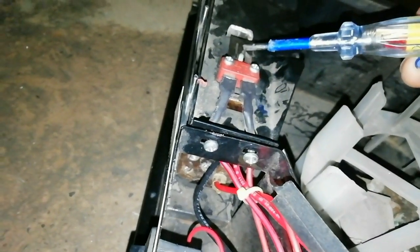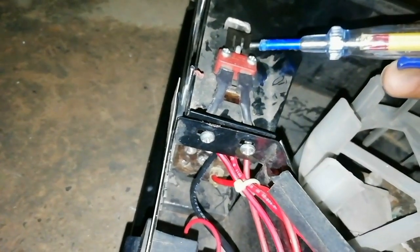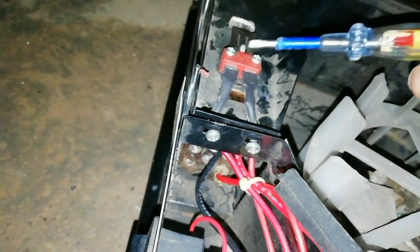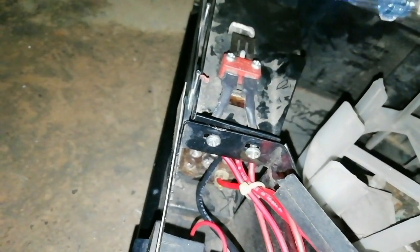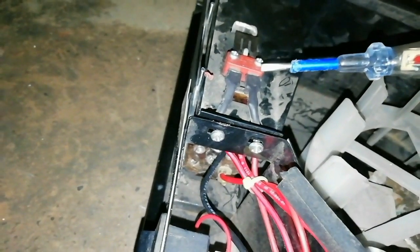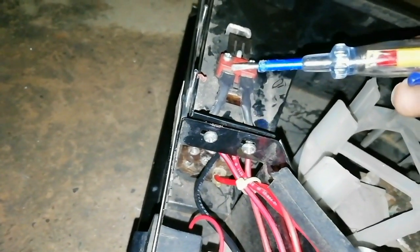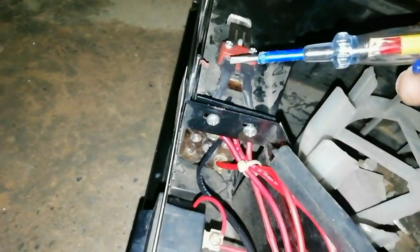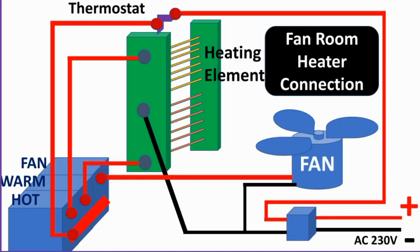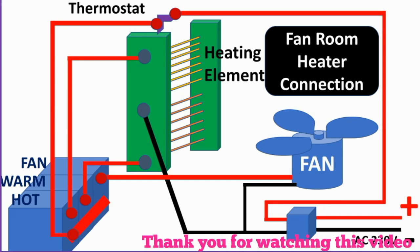This thermostat cuts off the input supply during overheat, which will help us to protect the body and internal wiring of the heater. This is the wiring connection of the room heater. Thank you for watching this video.